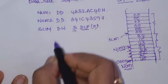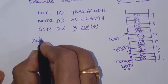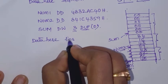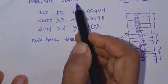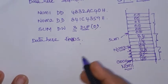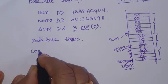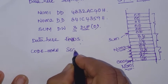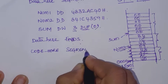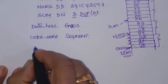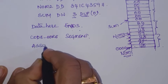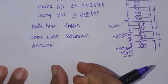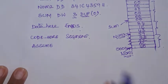Data declaration is over. We can end the segment here — 'data ends'. Now we start the code segment: 'code segment'. In the code segment, first we need to use the ASSUME directive to tell the assembler which segments are used for this particular code.